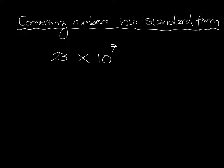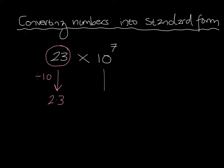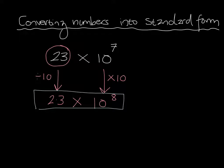Sometimes you'll see a number that looks like it's in standard form but isn't actually in standard form. For example, 23 multiplied by 10 to the power of 7. The 23 is bigger than 10, i.e. not between 1 and 10, so this number is not in standard form. What we're going to do is convert it: instead of 23, we make this 2.3, which means we've divided by 10. So to ensure the overall number remains the same, we multiply the power part by 10, giving us 10 to the power of 8. The final answer is 2.3 multiplied by 10 to the power of 8.